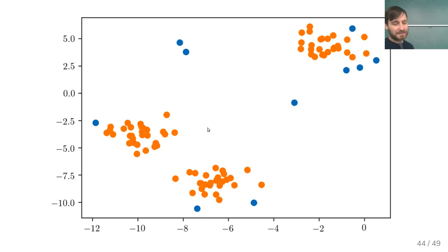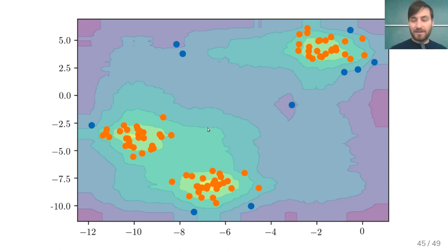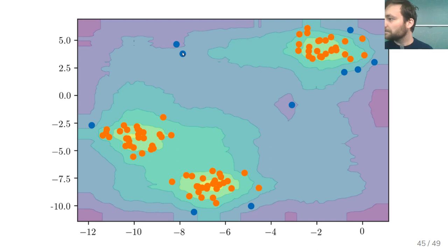On the toy dataset, Isolation Forest correctly identifies the most outlier-like points without needing to specify a model form. The decision boundaries are ragged since splits are drawn randomly — trees produce noisy, non-smooth surfaces. As a caveat, two-dimensional datasets behave very differently from real datasets, so don't over-interpret these visualizations.